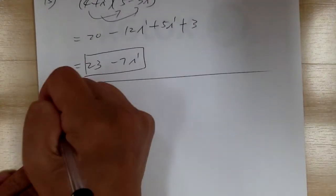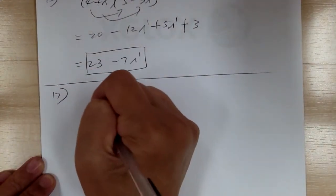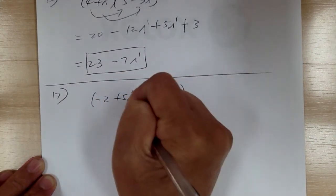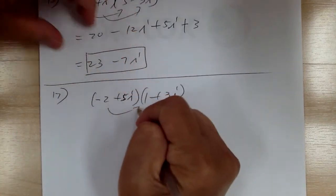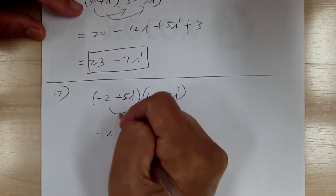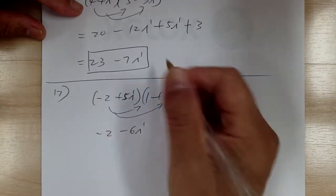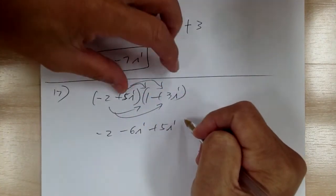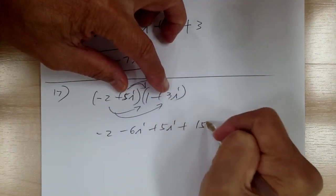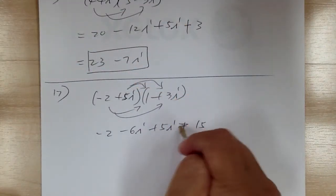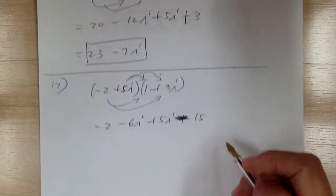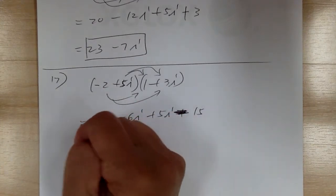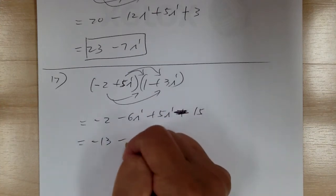Number 17: you got (negative 2 plus 5i)(1 plus 3i). Distribute: negative 2; negative 6i; plus 5i; 5 times 3 is 15, and i times i is negative 1, so this is a negative. Combine the real terms to get negative 13, and the imaginary part gives you minus i.